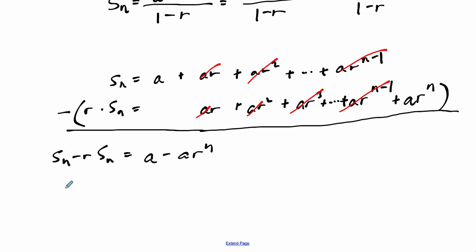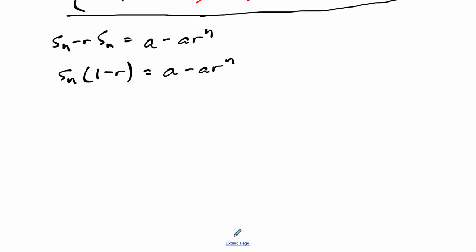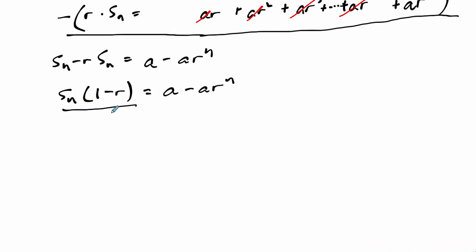What are we trying to find? We're trying to find the partial sum, so I'm going to factor that term out. 1 minus r, right? s times 1 is s minus r times s is rs. I'm just factoring that out. And then to solve for the partial sum, get it all by itself. I divide both sides by 1 minus r.